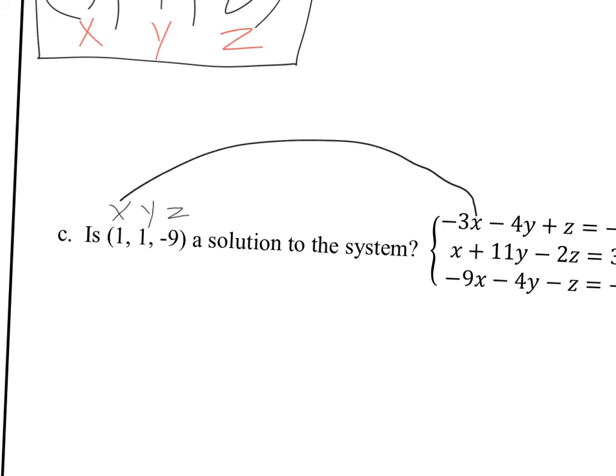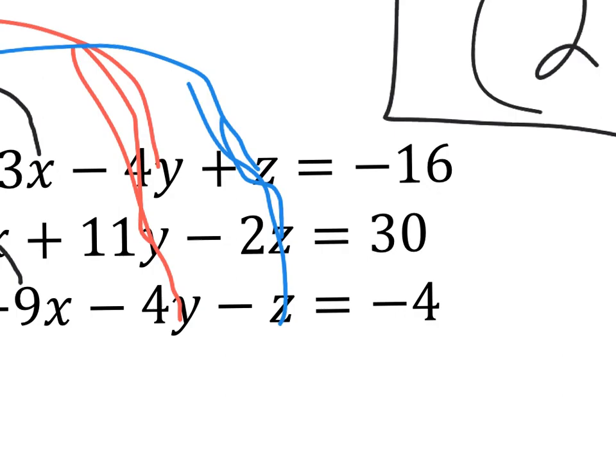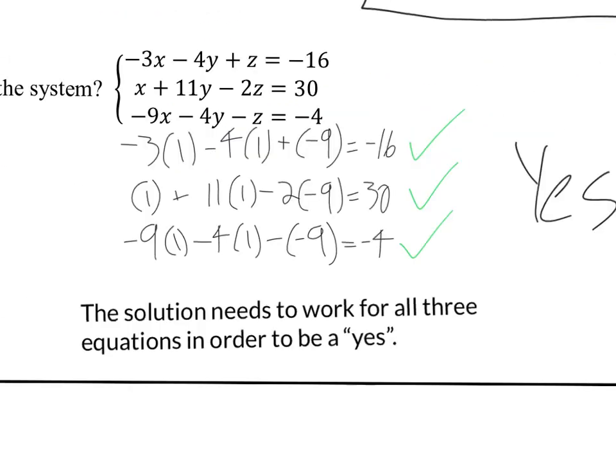So I'm going to plug in everywhere I see an x, I'll plug in a 1. Everywhere I see a y, I'll plug in a 1. Everywhere I see a z, I'll plug in a negative 9. And then you got to evaluate. You got to evaluate and see if it equals negative 16, 30, and negative 4. Okay. So let me show you what that'll look like. All right. So here I plugged everything in.